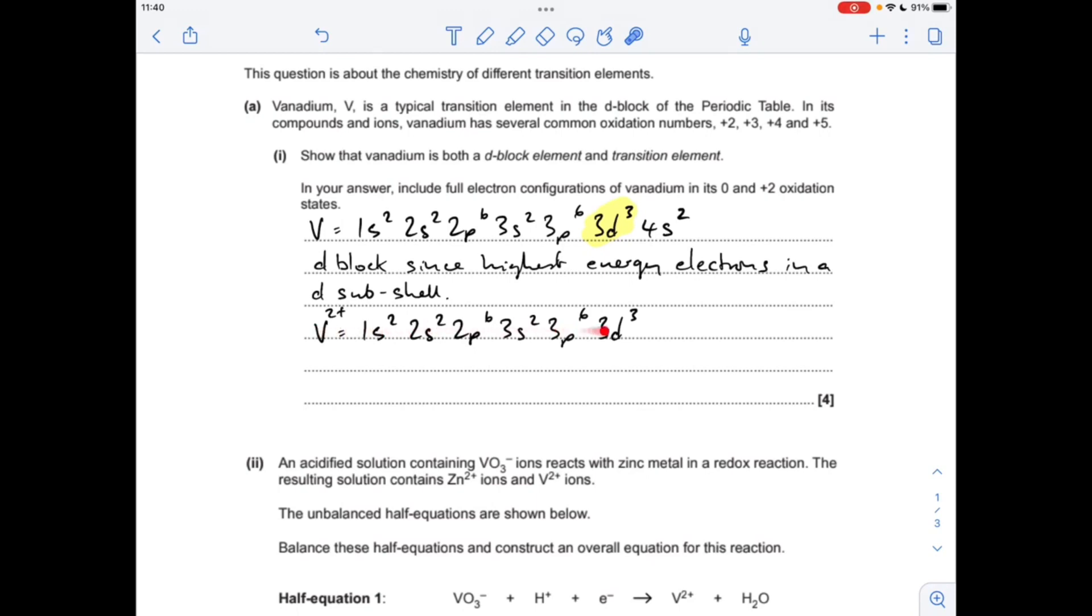Moving on to the fact that it's a transition element, I'm going to use the electron configuration for the V2+ ion. You'll notice we've lost the 4s2 electrons. Why is it classed as a transition element? Because vanadium is able to form an ion with an incomplete d sub-shell. Remember, d sub-shells can hold up to 10 electrons, it's only got three in, so it's partially filled or incomplete.